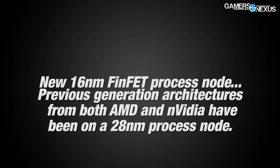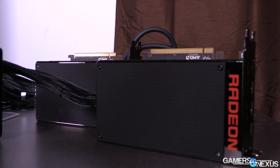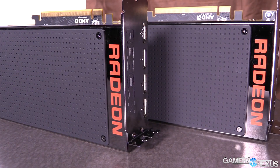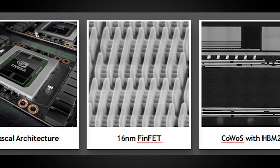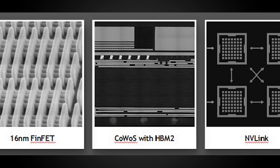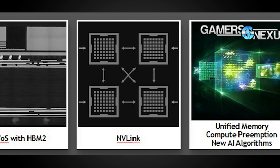All previous generation architectures from both AMD and NVIDIA have been on a 28nm process node, so this die shrink has been years in the making. The process shrink champions reduced wattage and more densely packed transistors, continuing performance-per-watt gains. AMD began its improvements with Fiji by liquid cooling the Fury X, but Pascal and Polaris undergo a tremendous die shrink. The move to FinFET transistors means power leakage becomes less significant, marking the end of life for planar FETs in GPUs.